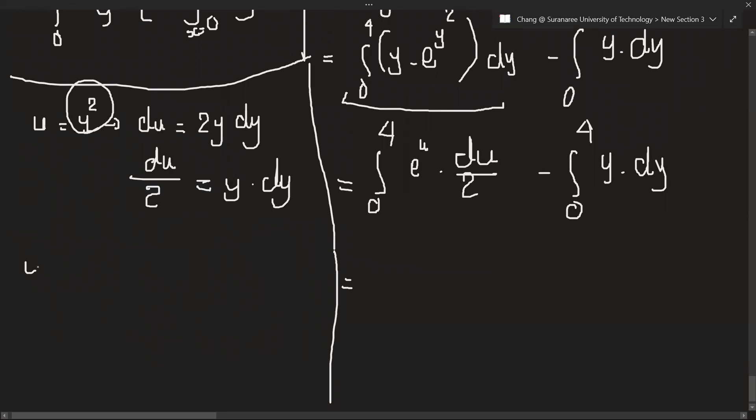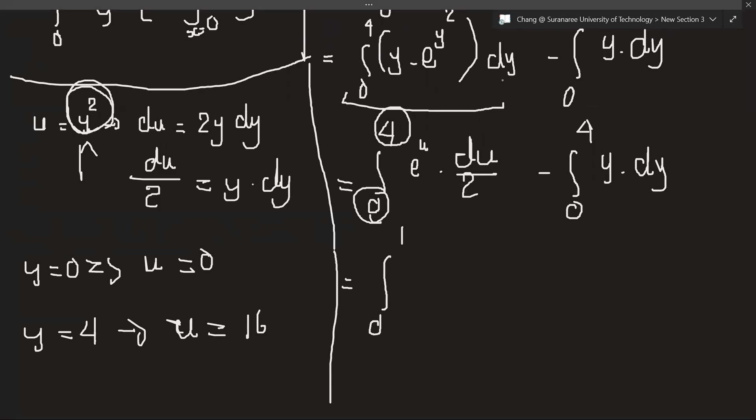The value of y is 0 to 4, right? So when y equals 0, the value of u when we put 0 here, we will get 0. When y equals 4, the value of u is 4 squared, so the value of u is 16. We can change the variable here. So 0 to 16, e^u du over 2, and here is 0 to 4, y dy.